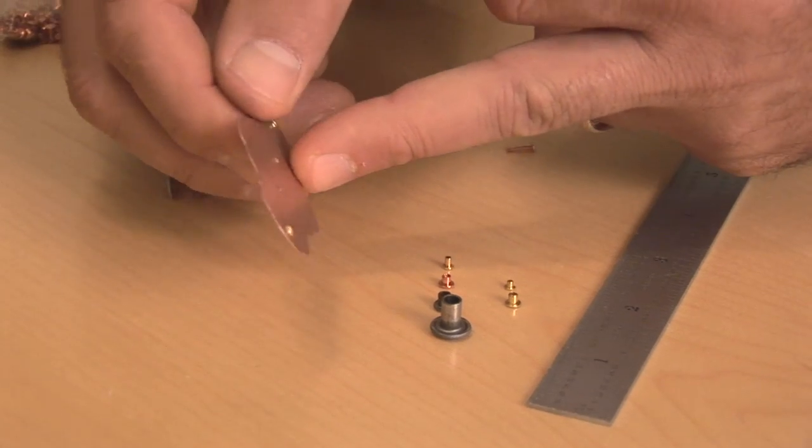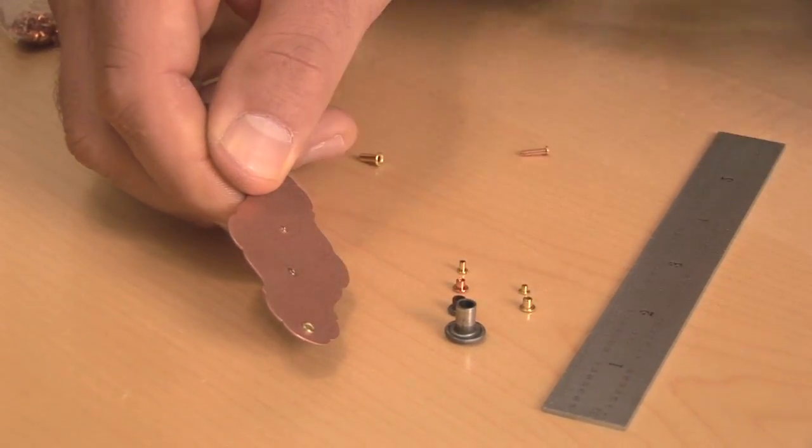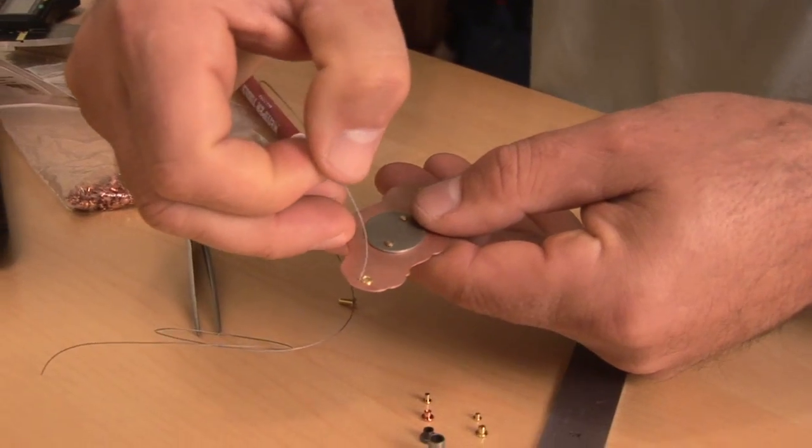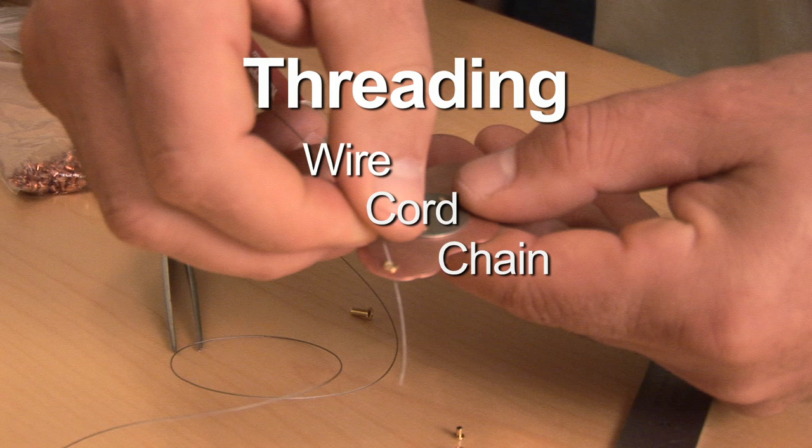On the back are the flared ends that hold the rivets, along with the holes provided by the eyelets, which you can use to thread a wire, a cord, a chain, or whatever.